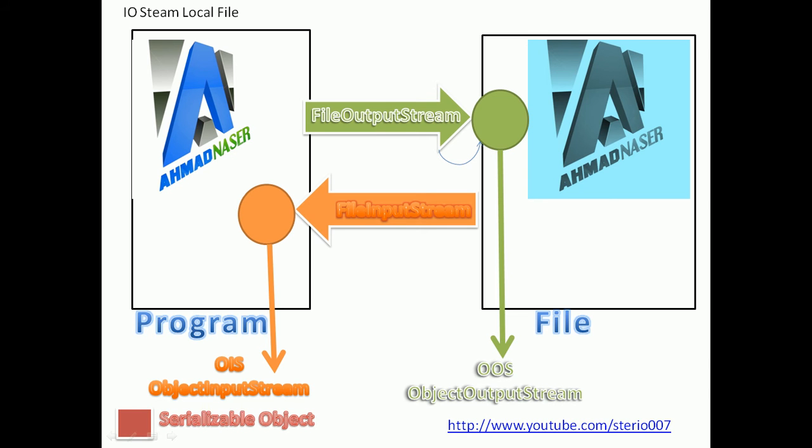Let's talk about IO stream and the components. We have the FileOutputStream, the FileInputStream, a program, a file, OIS which is the ObjectInputStream, the ObjectOutputStream, and a serializable object. So let's count: one, two, three, four, five — five components are playing a role in IO stream for local file.